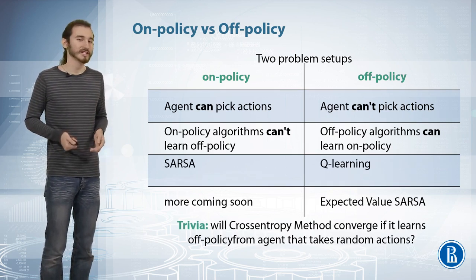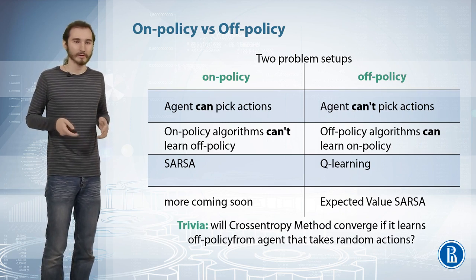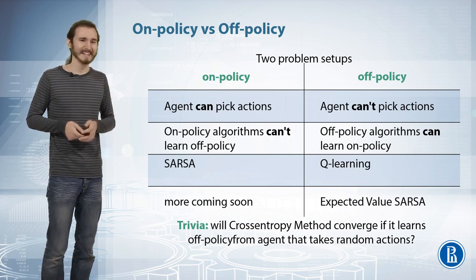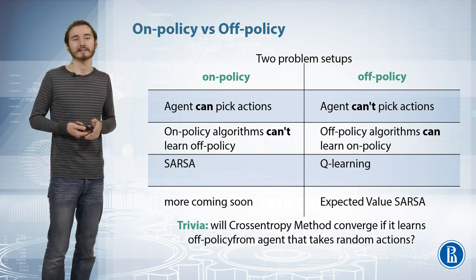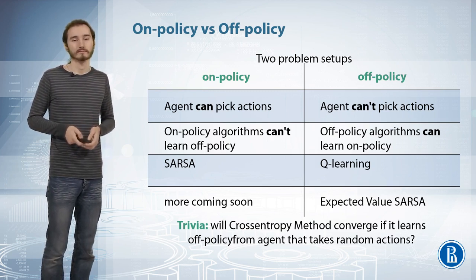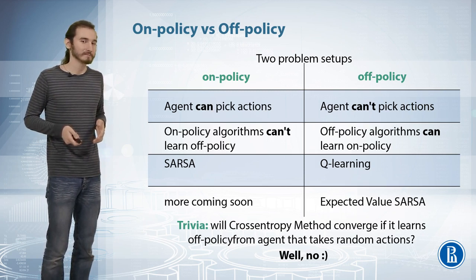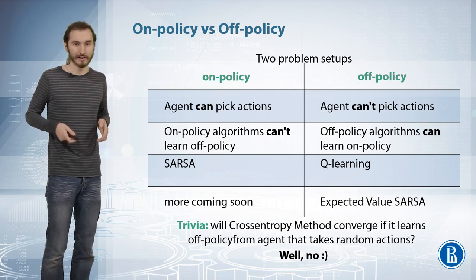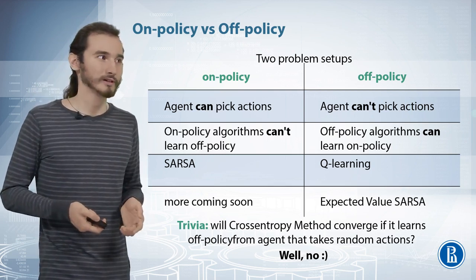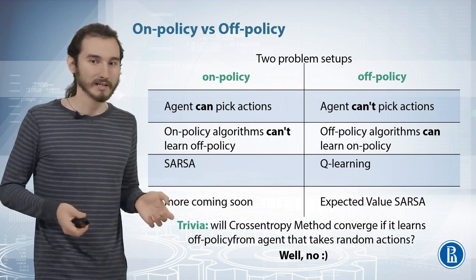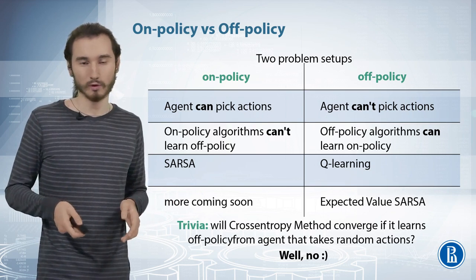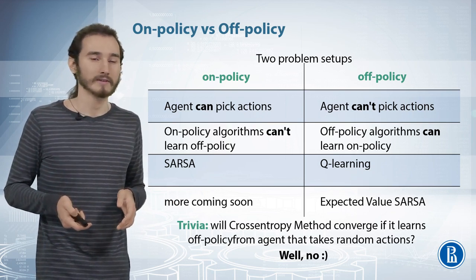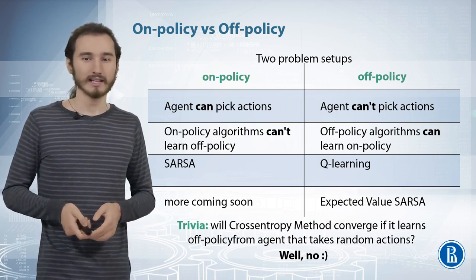There's also the neat question of whether the cross-entropy method — the first reinforcement learning method we ever studied — relates to on-policy or off-policy. This is slightly controversial. The issue is that the cross-entropy method technically requires you to sample sessions from your current policy. You can modify it to allow for different strategies, but if you train it on a policy which is clearly sub-optimal and always pick samples from that policy, there's no way you're going to improve the selected elite sessions based on that. So technically, it's on-policy only.